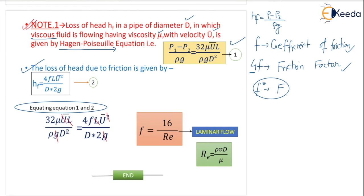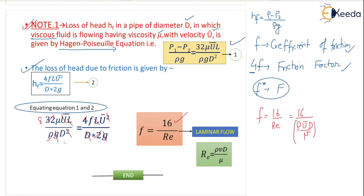After cancellation, mu remains along with diameter terms. Working through the numbers: 4 times 8 gives 32, and 2 times 8 gives 16 — that is why 16 appears. So you have to find the value of F. F can be written in terms of Reynolds number as 16 by Re. Reynolds number Re is rho V D by mu, so substituting gives F equal to 16 divided by rho V D over mu.